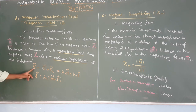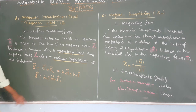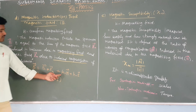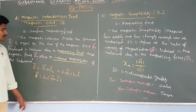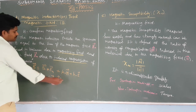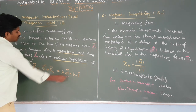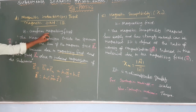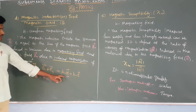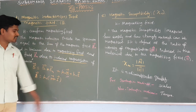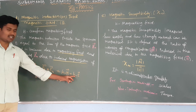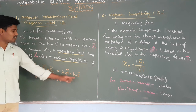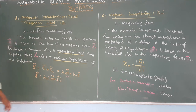Total magnetic field is equal to B0 plus BM. In this definition, we have mu0 times H and mu0 times I. Here, H is the uniform magnetizing field, I is the magnetic induction, and mu0 is the permeability of free space.